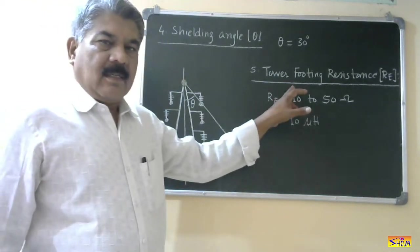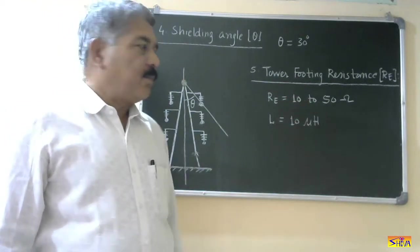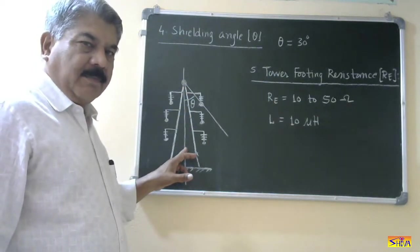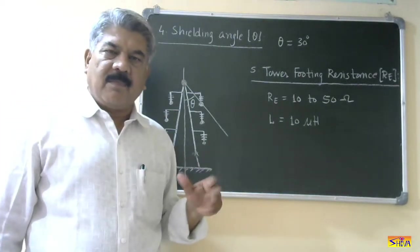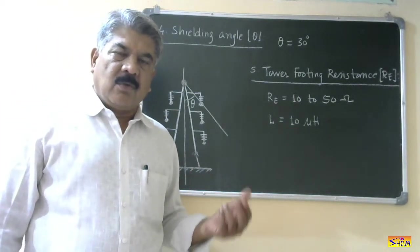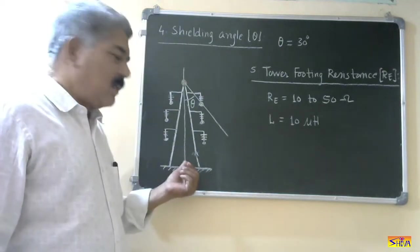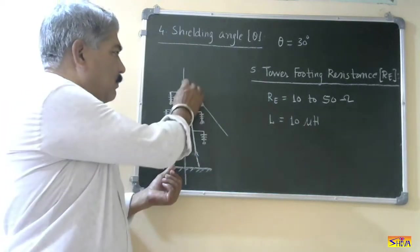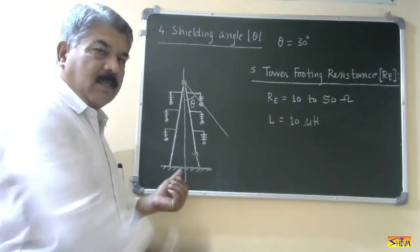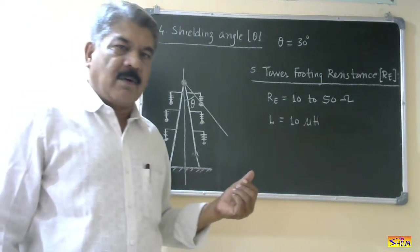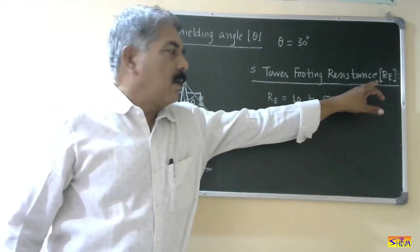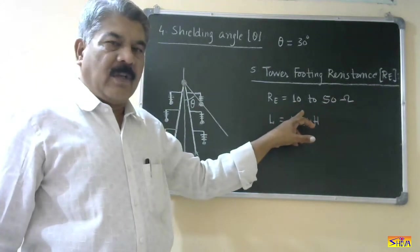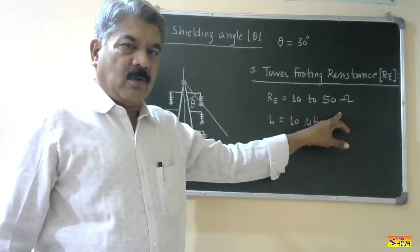Next definition is tower footing resistance. Now this tower is metallic structure. So when metal comes there will be some resistance. So resistance of this tower is called as tower footing resistance. When we measure the resistance from this tower top up to this. That resistance is tower footing resistance. We denote this as Re. And its value varies from 10 to 50 ohms.